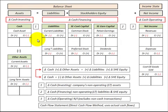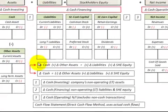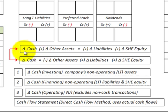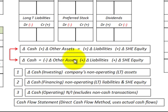Here we're going to be using the direct cash flow method to determine our cash flow statement. This is where we use the actual cash flows through our cash account. We're going to be using the equation where assets equal liabilities plus stockholders equity. I've broken assets apart between the cash asset and all other assets. So the change in cash equals minus the change in all the other assets plus the change in liabilities plus the change in stockholders equity.